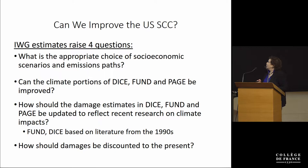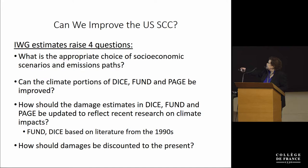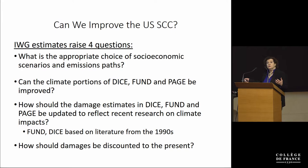How can those estimates be improved? For each of the four steps, there's something that can be done. In terms of socioeconomic scenarios and emission paths, those certainly can be improved beyond just taking five Stanford Energy Modeling Forum paths. The climate portions of the integrated assessment models can be improved, and the damage estimates underlying DICE, Fund, and Page can be updated to reflect recent research on climate impacts. And finally, the question of how discounting should be done — whether at a constant exponential rate or some other way.